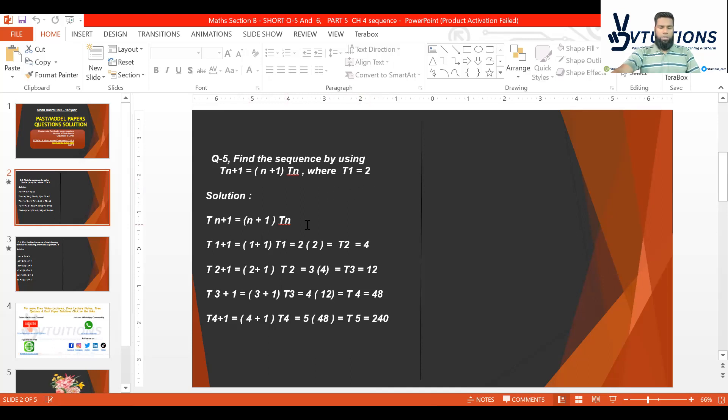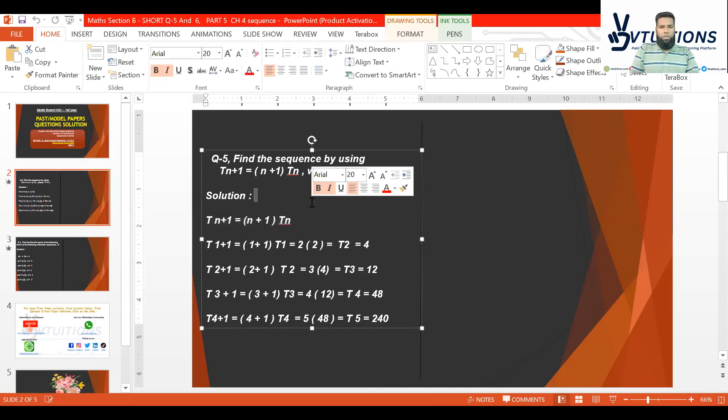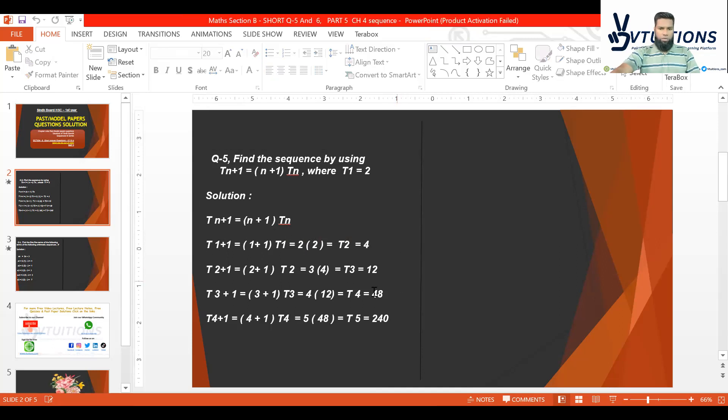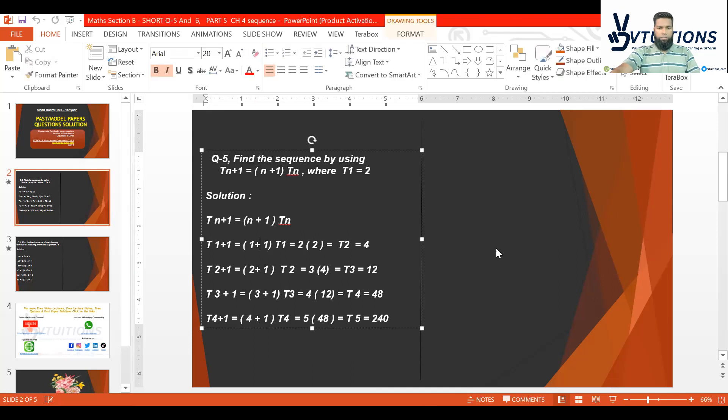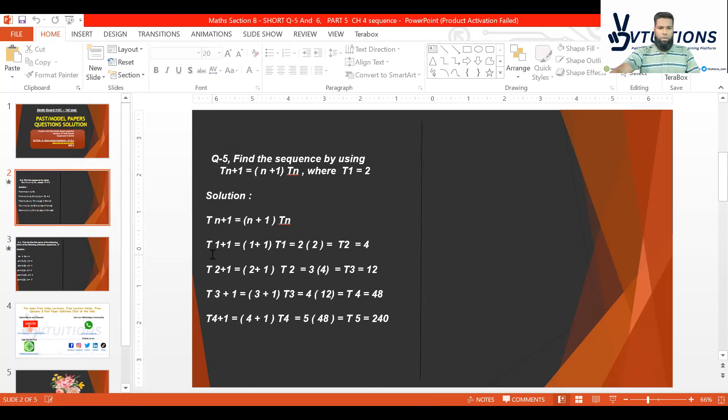In the solution, what will we do and how will it be done? Students, you can see that Tn+1 = (n+1) × Tn, this is the given formula, right? Then after this, T1+1, where the value given is n=1, I replaced it here because we're talking about sequences.